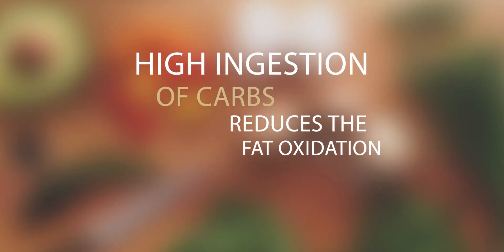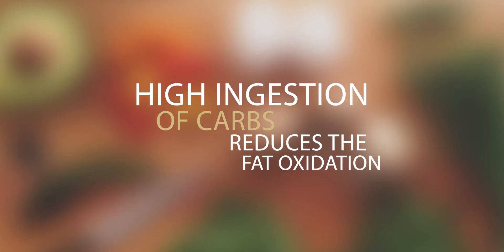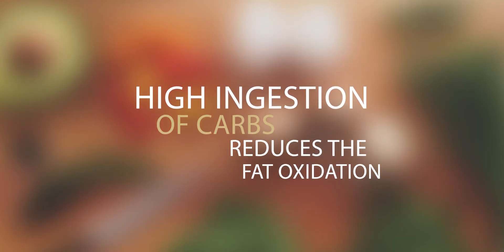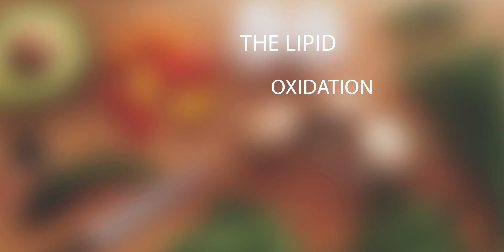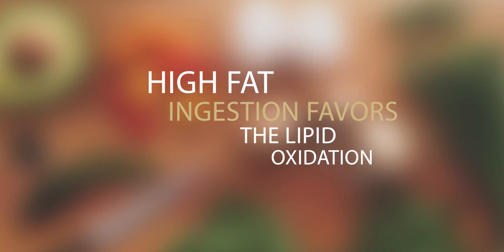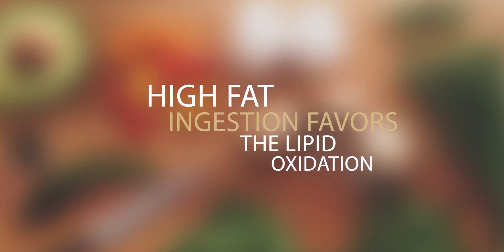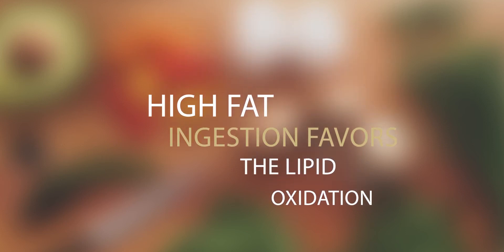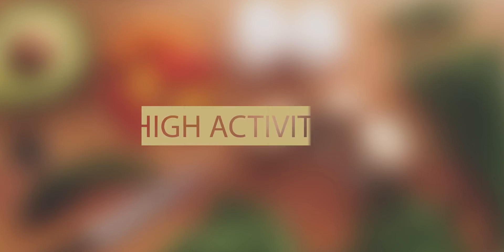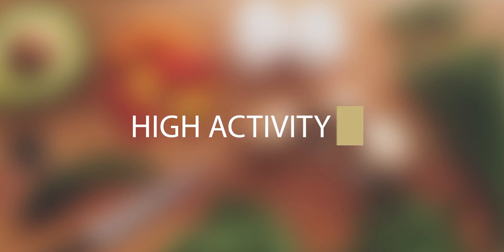The high ingestion of carbohydrates reduces the fat oxidation. On the other hand, the high fat ingestion favors lipid oxidation by becoming the main source of energy, but to do so it's important to have a high activity level, otherwise they will be stored in adipocytes.